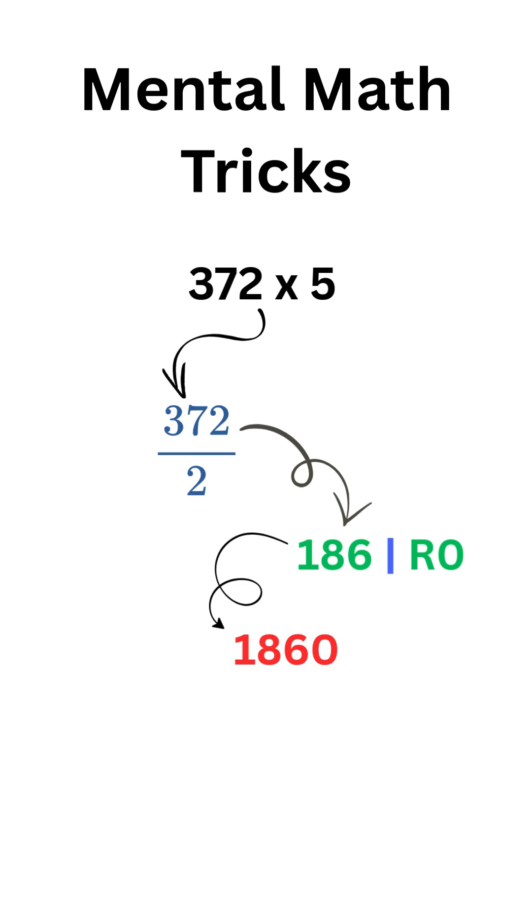372 times 5 is 1860. Whoa, that is a simple trick. Let's take another example.